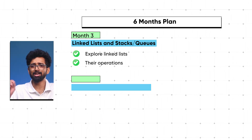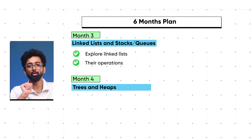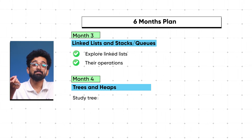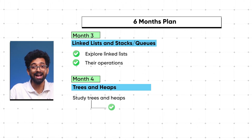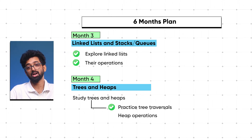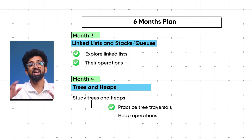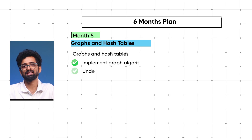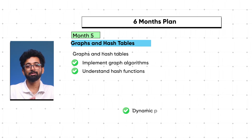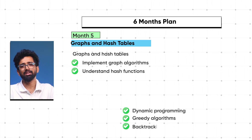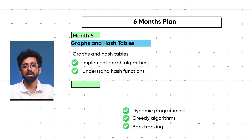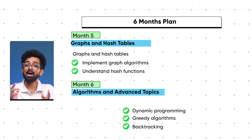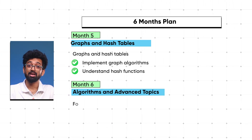In month four, study trees and heaps — practice tree traversals and heap operations, allocating two weeks for trees and two weeks for heaps. In month five, get into graphs and hash tables — implement graph algorithms and understand hash functions, spending two weeks on graphs and two weeks on hash tables.